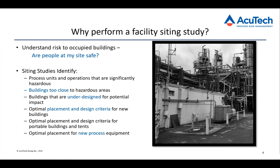For new buildings, we can look at the best place to put the building, or we can define criteria for buildings that have to be close. For something like a portable building or a tent, we can look at where's a good place to put it for the temporary time it will be there. Another way is to come at it from the other direction — I've got a permanent office building with lots of people and I want to put in a modification to a process or a new process unit. Where's the best place to put that to minimize the impacts to the building occupants?